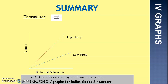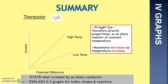Having a look at other components — this is a thermistor. We've got one at high temperature and one at low temperature. When a thermistor is at a constant temperature, it acts like an Ohmic resistor. Resistance decreases as temperature increases — that's the opposite of what we find for most metals, where resistance increases with temperature. But for a thermistor, the opposite is true.